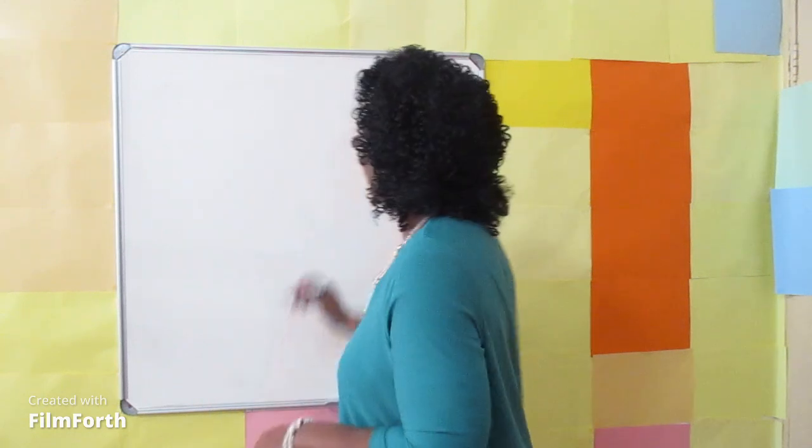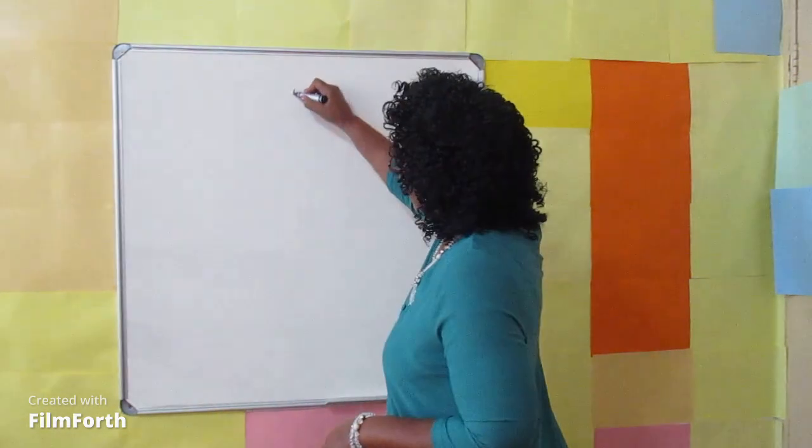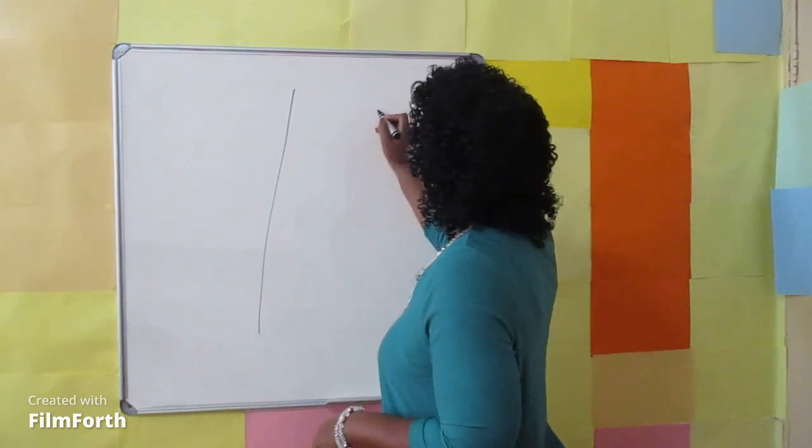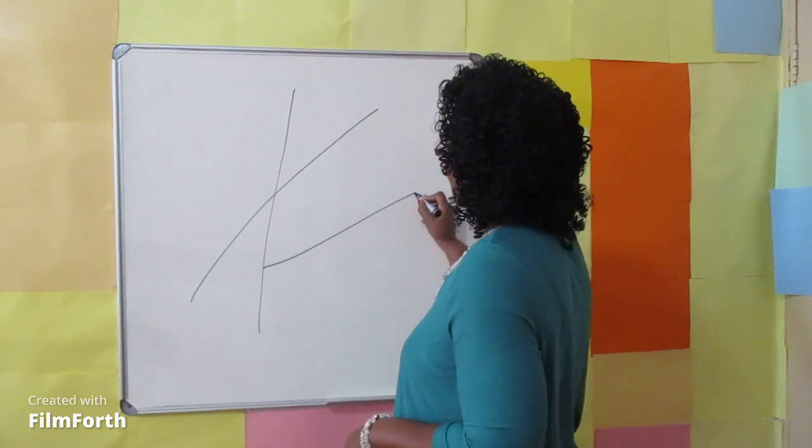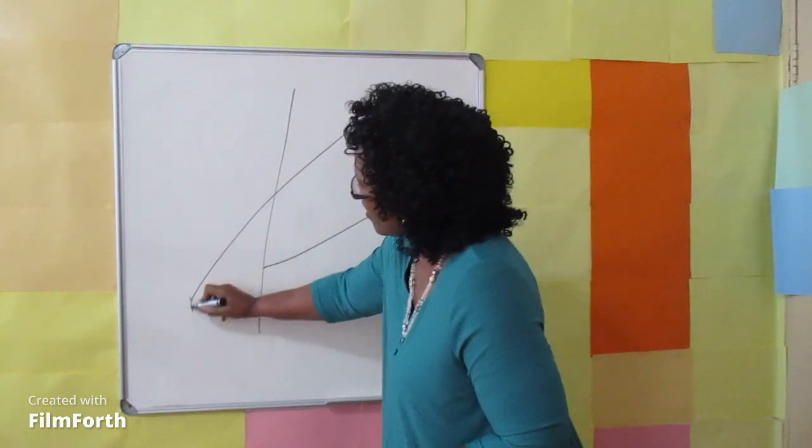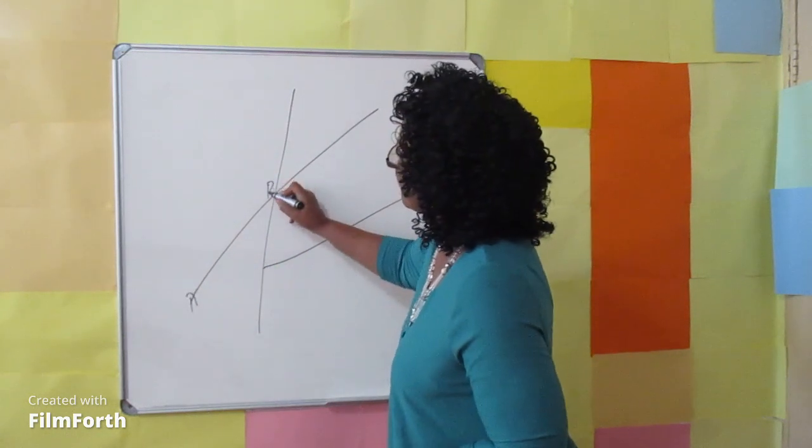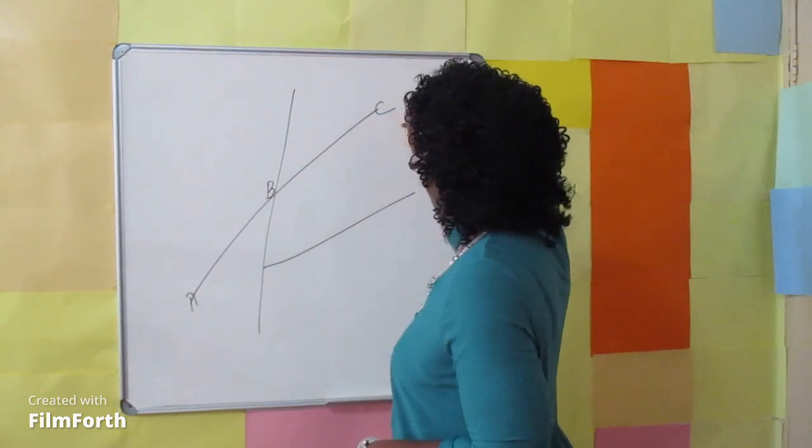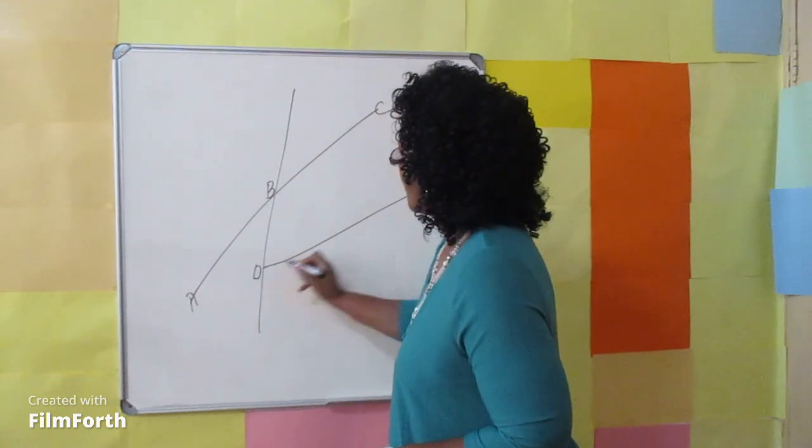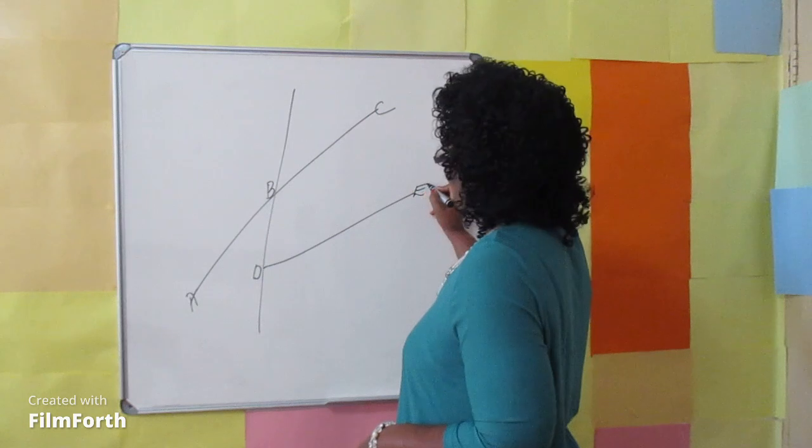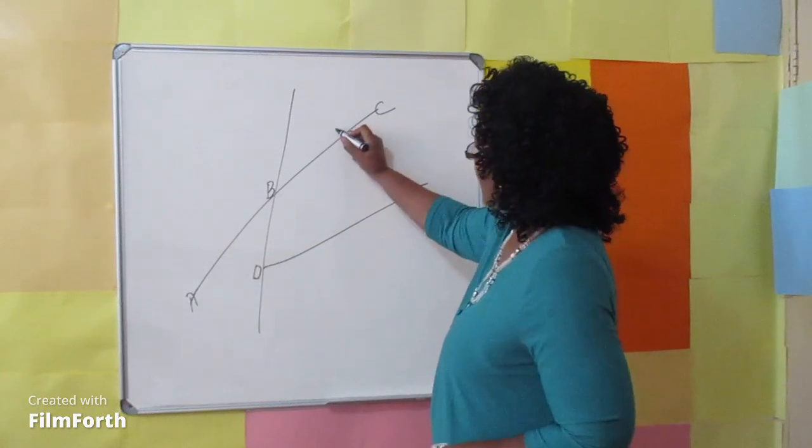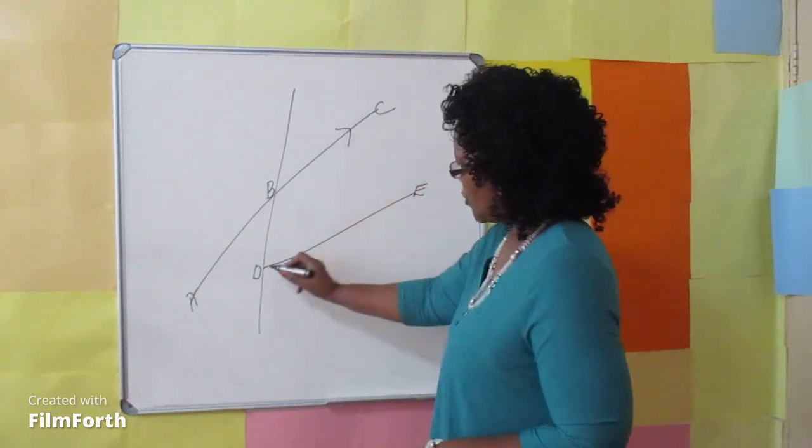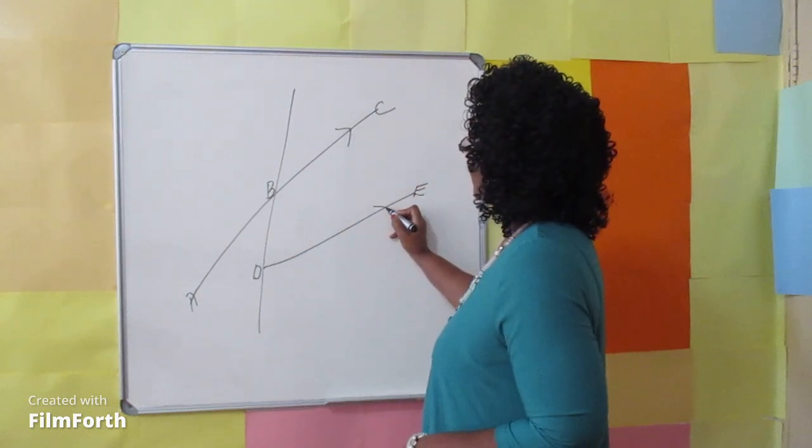Let's draw the diagram now. I am drawing the line. A, B, C line. D, E line. A, B or A, C line is parallel to D, E line.